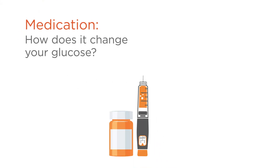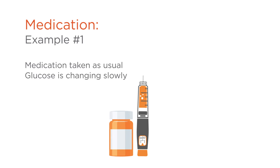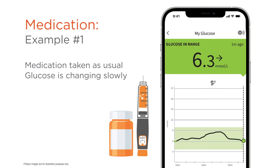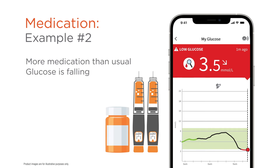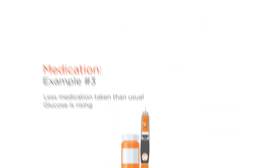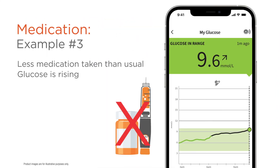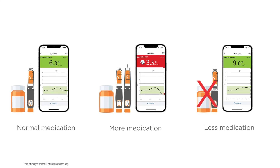Medication can also change your glucose. For example, you take your diabetes medication in the morning — here is what your scan could look like. Note that your glucose is in range. The next day you take more medication than required. You scan and you see that your glucose is falling and below target range. On a different day you forgot to take your medication. You scan and your glucose is rising. See how taking the right amount, too much, or not enough medication can change your glucose?